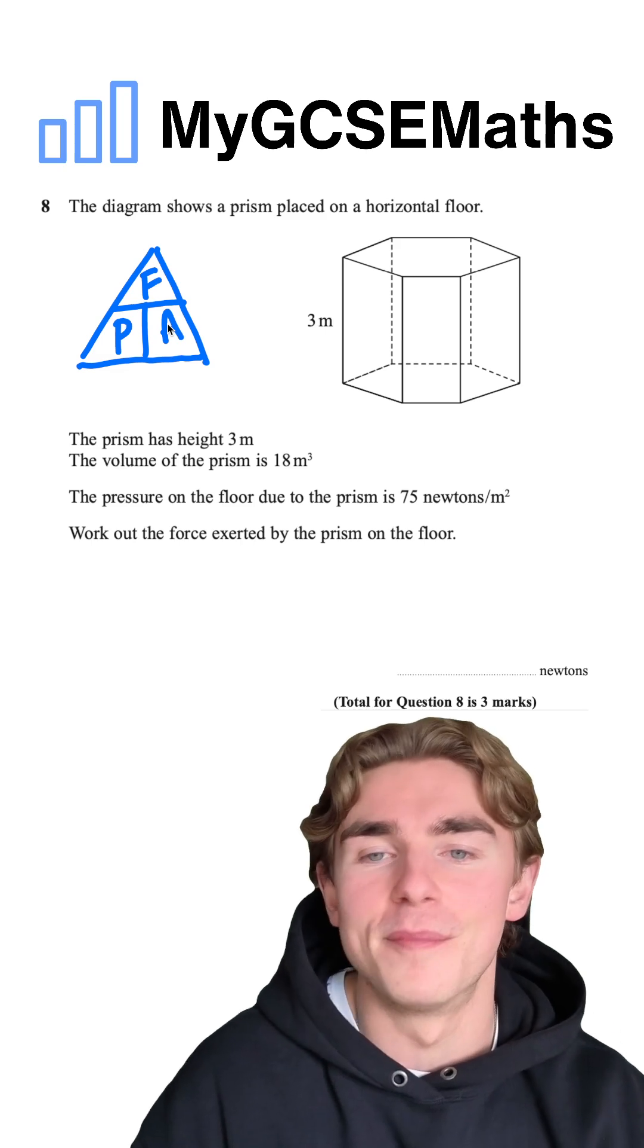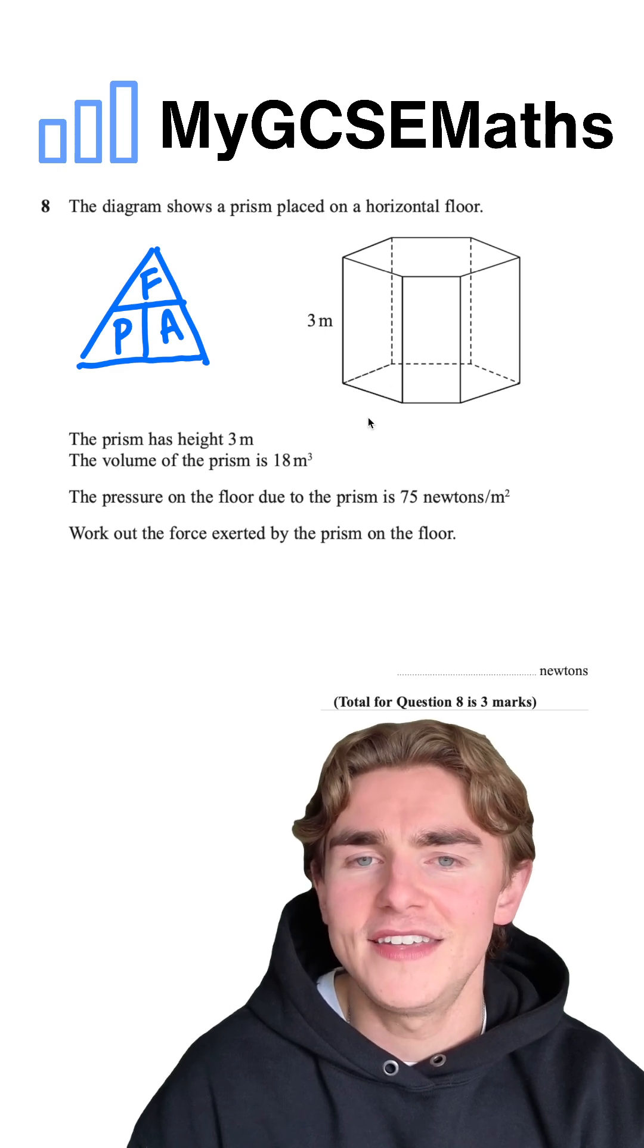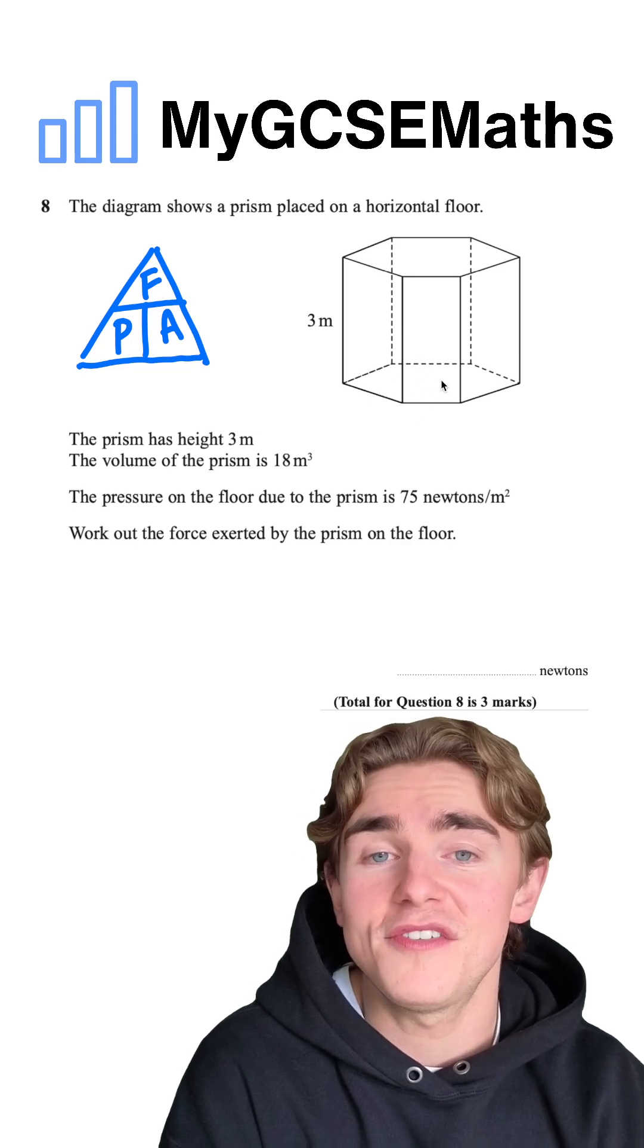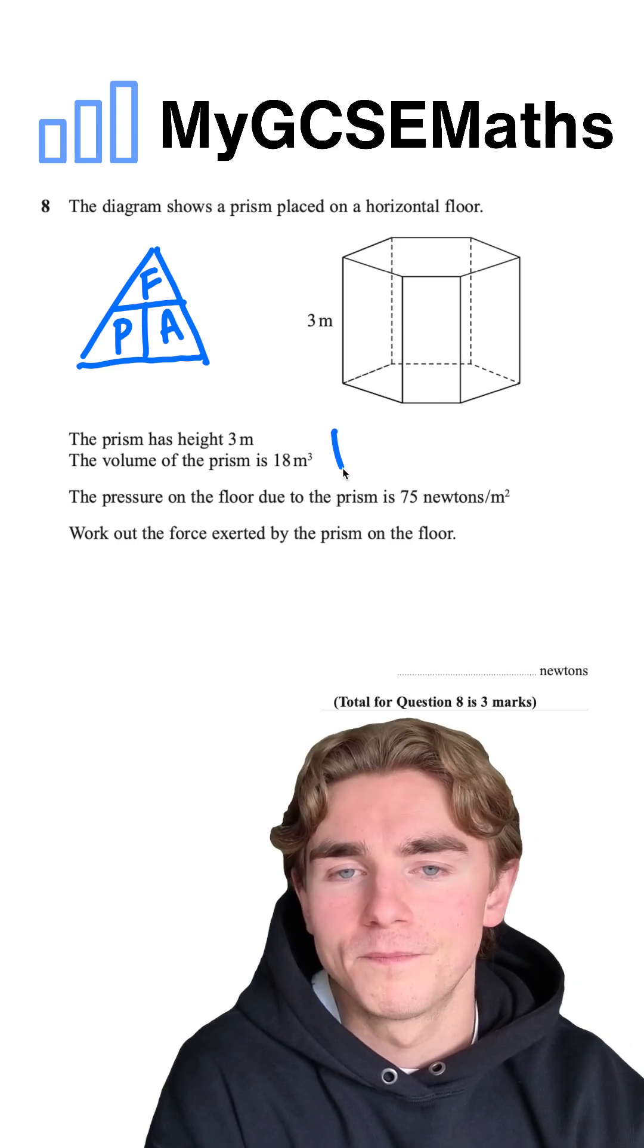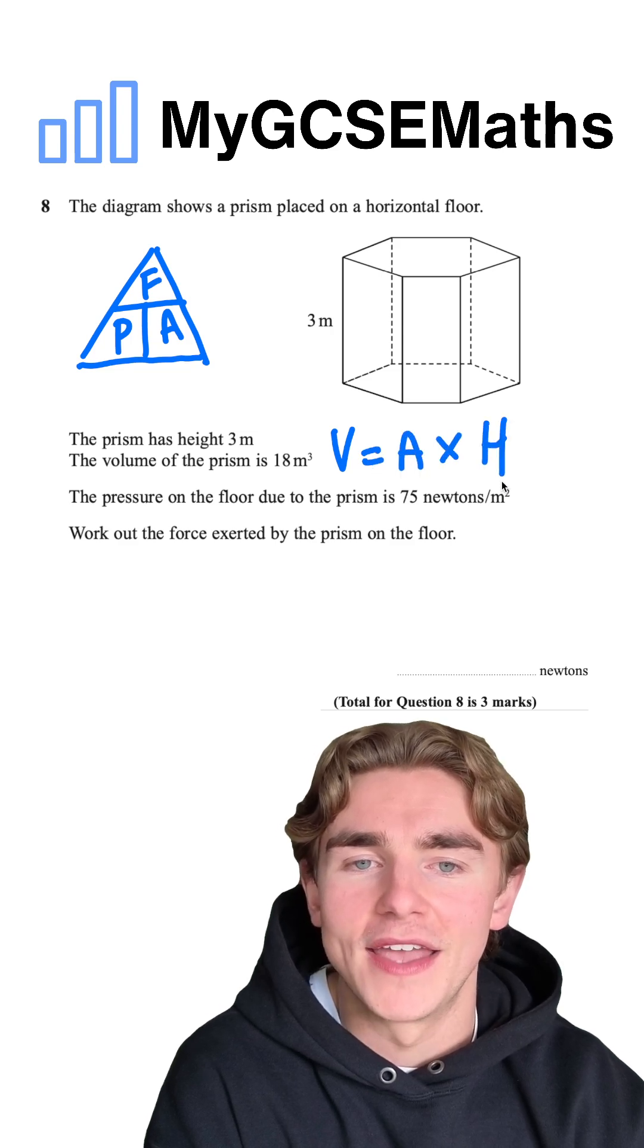How do we work out the area of the base face? Well, we know that the volume of the prism is 18. So in order to work out the area, we can use the fact that the volume of a prism is equal to the area of the end face times by the height.